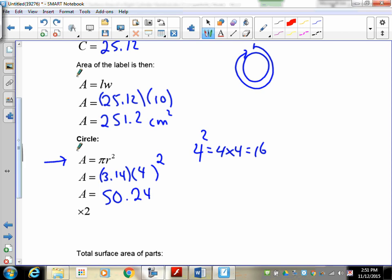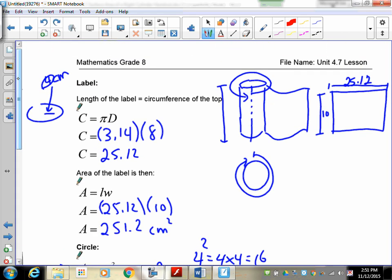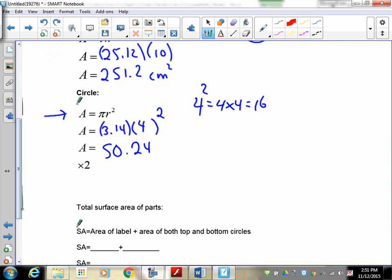Now, remember, on our cylinder, we had a circle here on the top. We also have a circle on the bottom. So, our cylinder's got two circles. So, we have to take that surface, that area, and multiply it by 2. And that gives us 100.48.